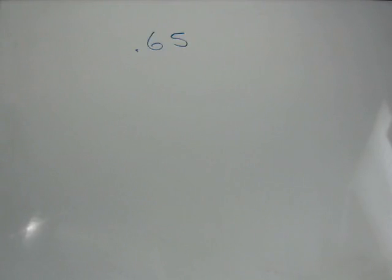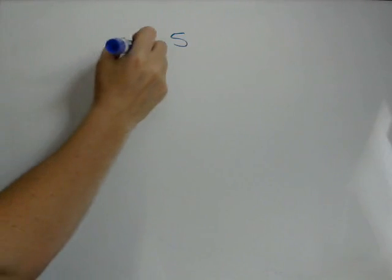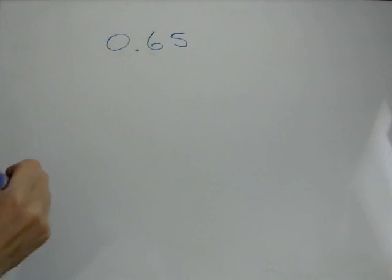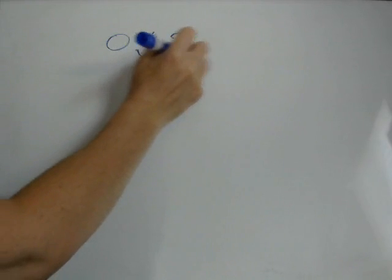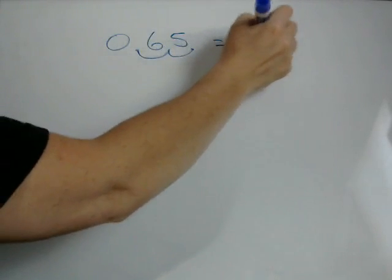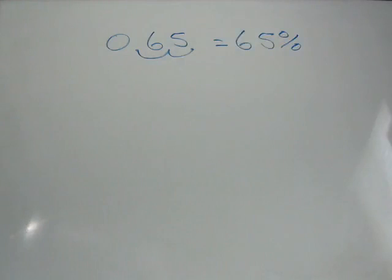So, if we're given .65, and we need to write that as a percentage, we move the decimal point. So if this was 0.65, one, two, so as a percentage, we would write that as 65%.